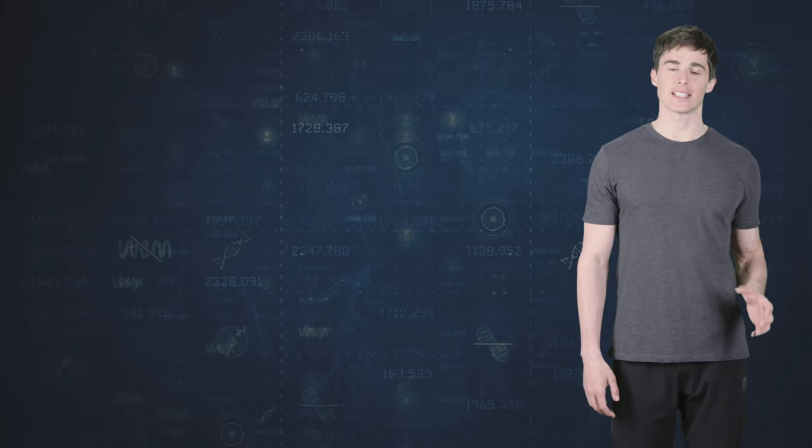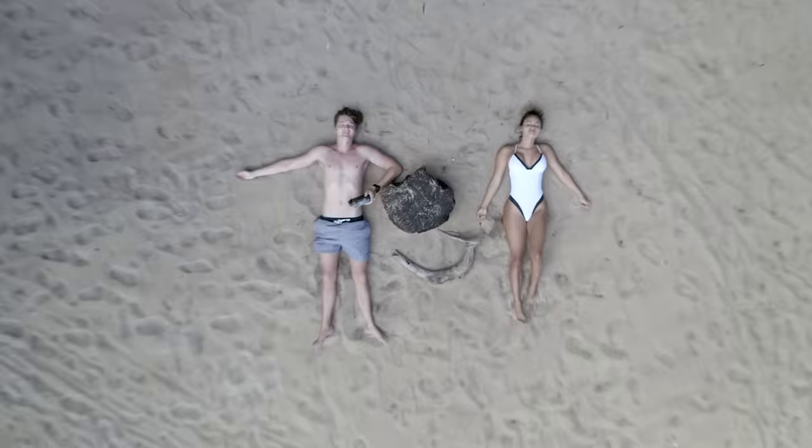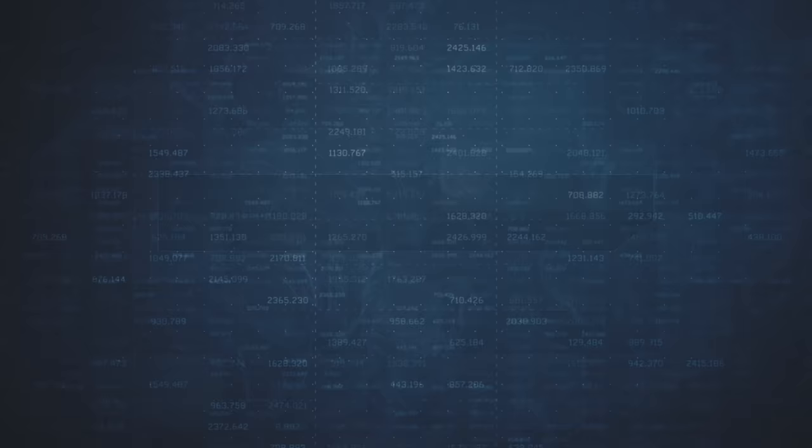And now we are ready to understand how we age. Scientists have identified nine processes which cause aging, known as the hallmarks of aging. Number one, genomic instability. Damage to our genome occurs daily because of external factors such as replication errors when making new cells.